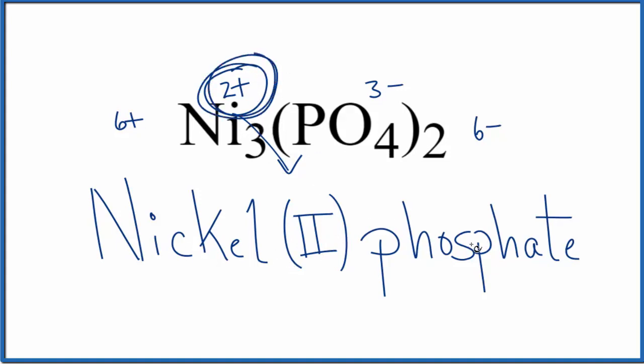If you were given this name and asked to write the formula, you'd know because of this two here, nickel is going to be two plus, and you need to balance the charges out. There's a link in the description if you need help with that. This is Dr. B with the name for Ni3(PO4)2. It's nickel two phosphate. Thanks for watching.